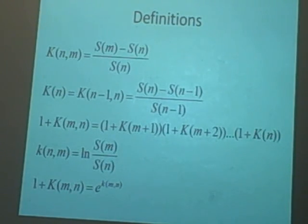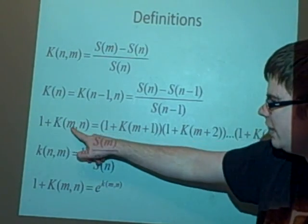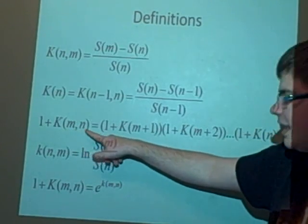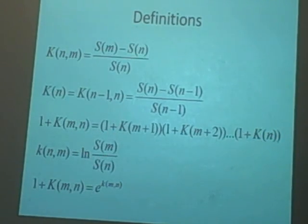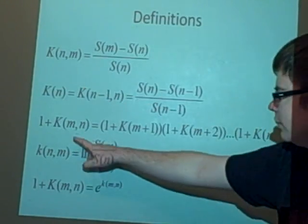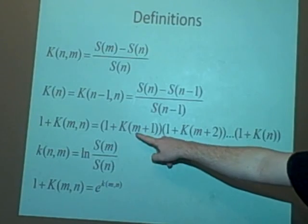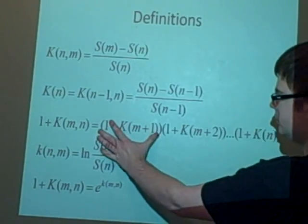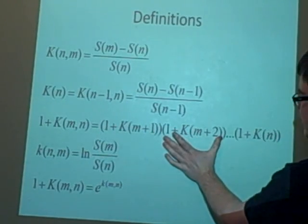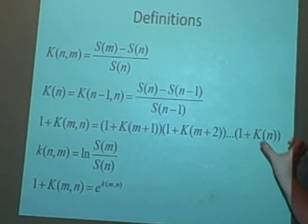Now one proposition or lemma they gave us is that 1 plus K(n,m) - I've reversed it for some reason - equals 1 plus K(n+1) times 1 plus K(n+2) and so on up to 1 plus K(n). And that's quite useful.